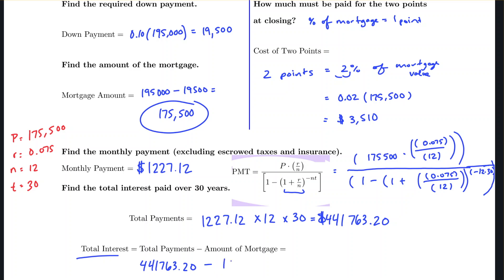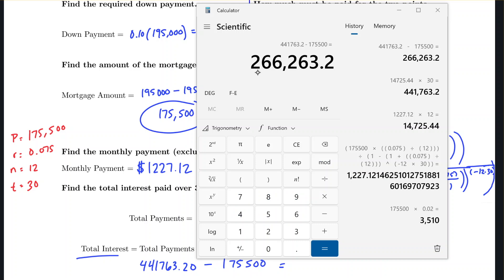To calculate the total interest paid, we subtract the mortgage amount of $175,500 from the total payments. A common mistake would be subtracting the full purchase price of $195,000, but remember the down payment already reduced the mortgage amount. Calculating this, the total interest paid over 30 years is $266,263.20.